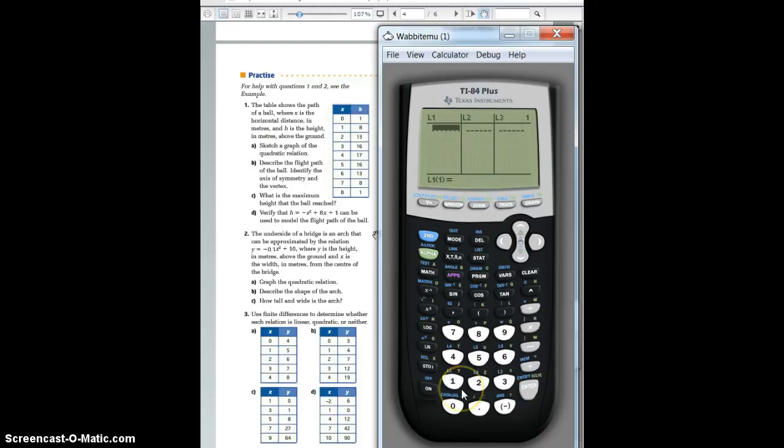So let's input it, so we got 0, 1, 2, 3, 4, 5, 6, 7, and 8. And then we're going to go over and input 1, enter, 8, 13, 16, 17, 16, 13, 8, and 1. So right now we've inputted all our information that we have from question number 1.